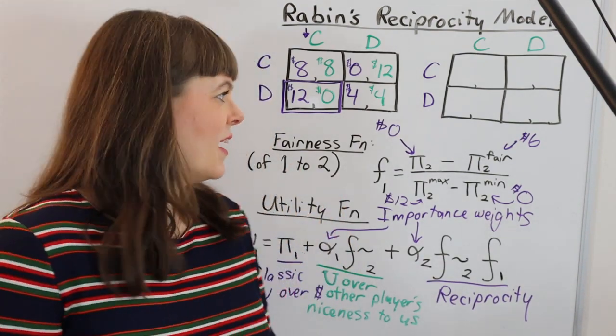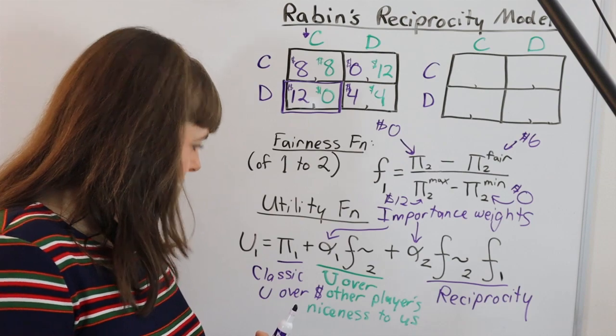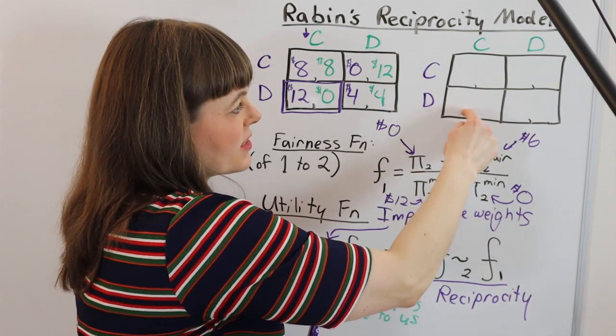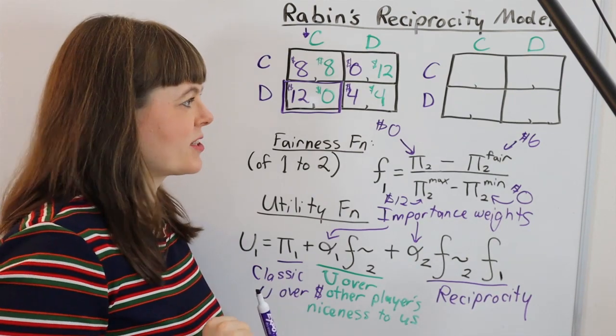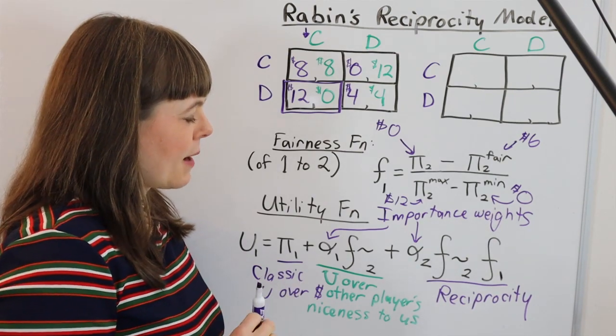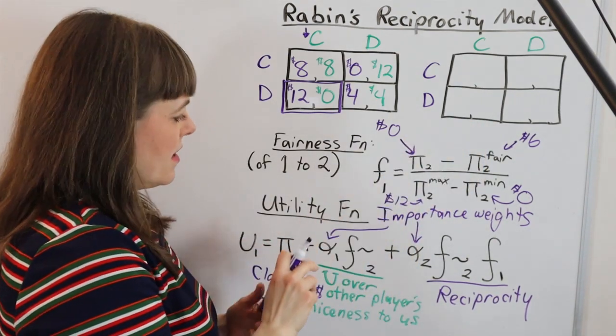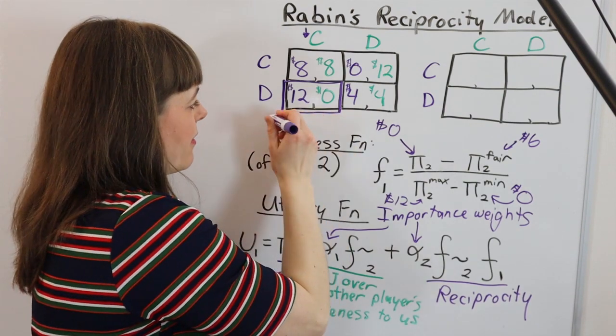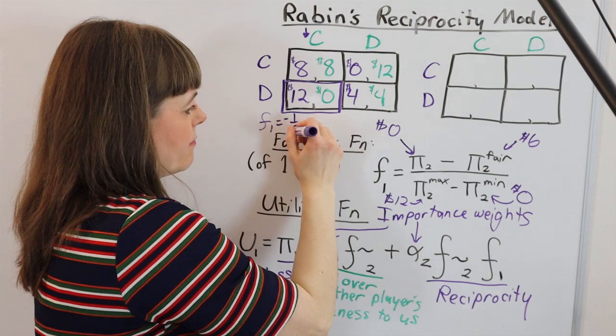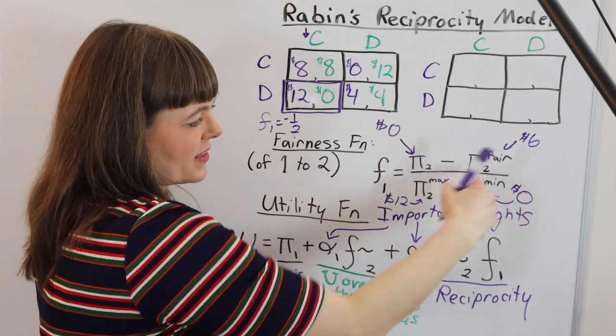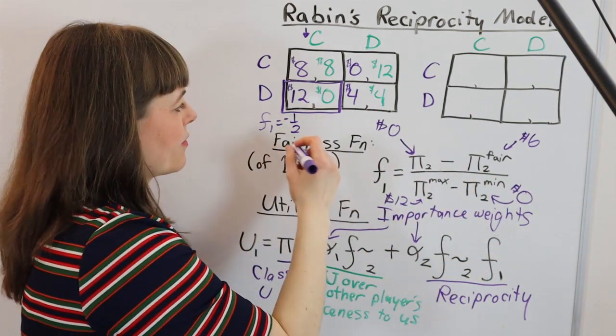All right, so what I want to do at this point is I would like to come up with one single number which is player one's utility for player two in this particular box. That's the only one I'm going to do. We've already captured in this box that player one's fairness toward player two is equal to negative one half. That's zero minus six over twelve. Negative one half.